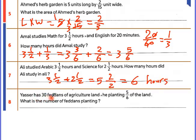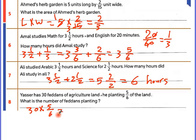Yasser has 30 feddans of agricultural land and plants 5 over 6 of the land. 'Of' means times. Number of feddans planted: 30 times 5 over 6. Simplify: 6 divided by 6 equals 1, 30 divided by 6 equals 5. So 5 times 5 equals 25 feddans.